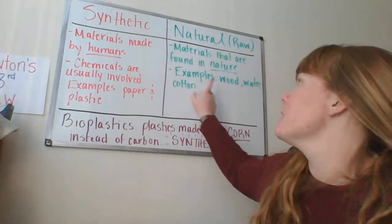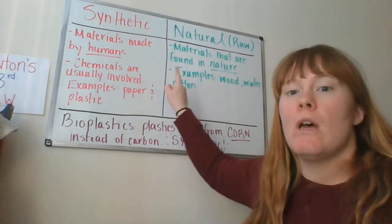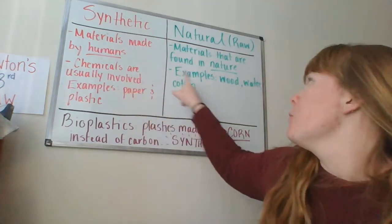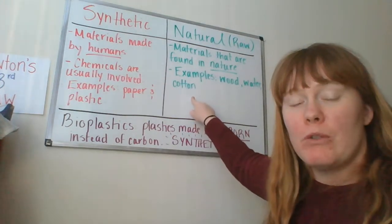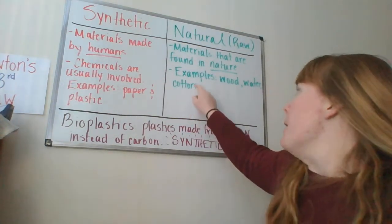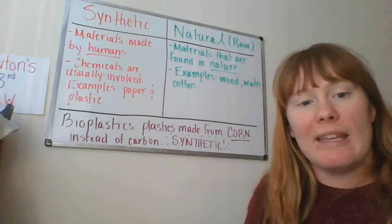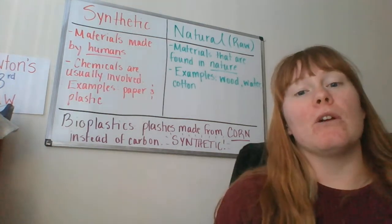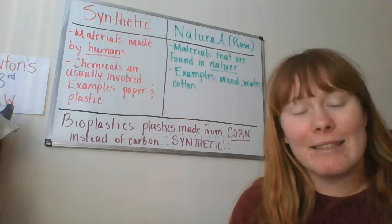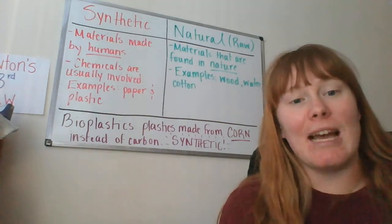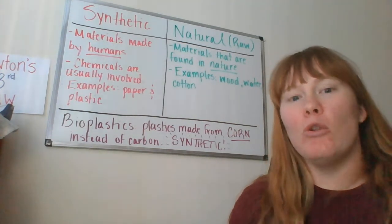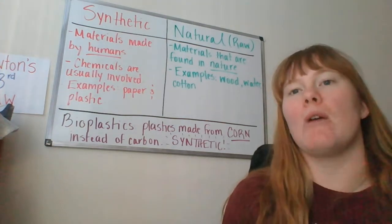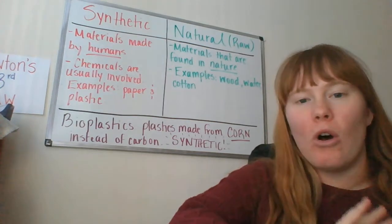Today we are going to be going over the difference between natural materials, also called raw materials, and synthetic materials. We're going to start with natural. We might also be referring to these as raw materials, because these are materials that are found only in nature. All raw materials can be found in nature — things like wood, water, cotton, plants, things that can grow, things that humans had nothing to do with. Humans don't create wood. Humans don't create water. Nature does all of that for you.